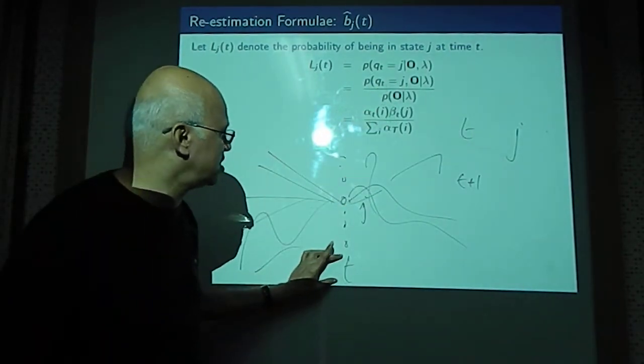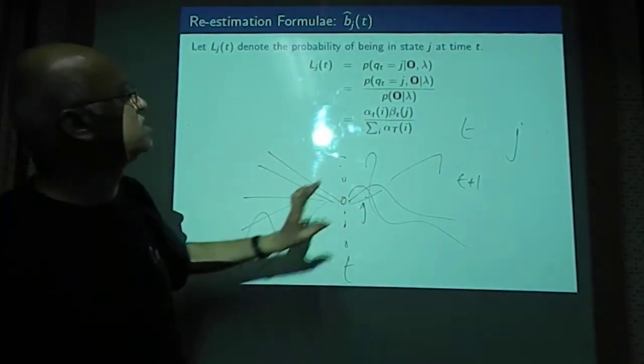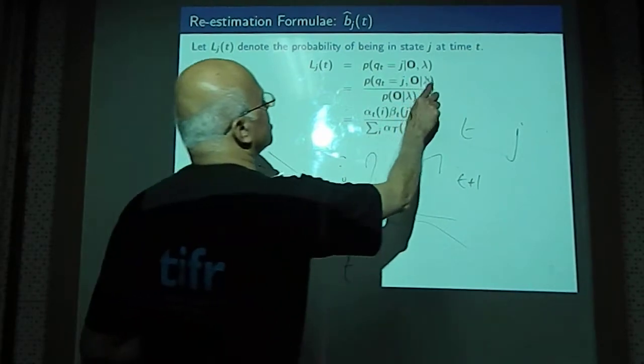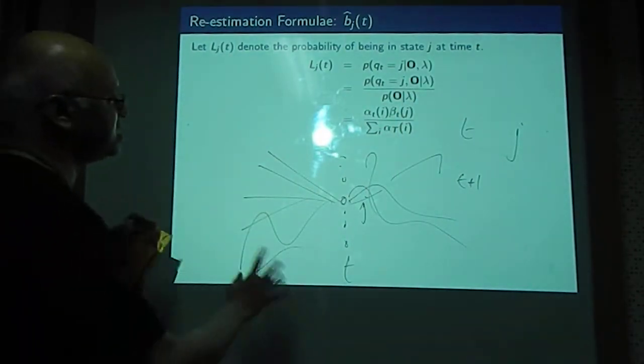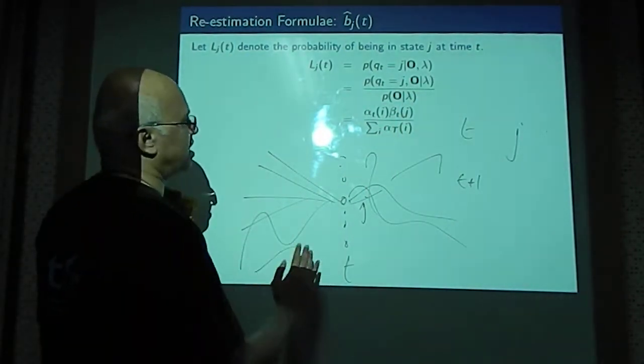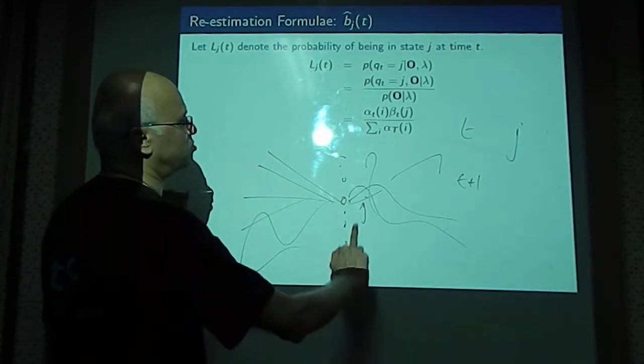That means O_t, the t feature vector, should be emitted by the jth state. So that is the numerator. And that is given by the fact that at time instant t, the system should be in state j.